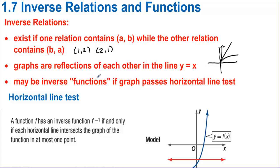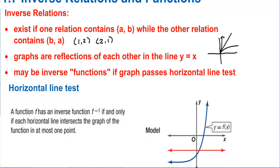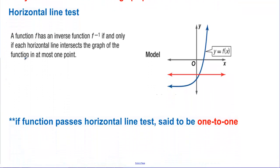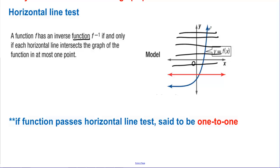A function may have an inverse if its graph passes the horizontal line test. A function F has an inverse function F-inverse if and only if each horizontal line intersects the graph of the function in at most one point. No matter where you draw the horizontal line, it only crosses the graph one time. If a function passes the horizontal line test, it is said to be one-to-one.